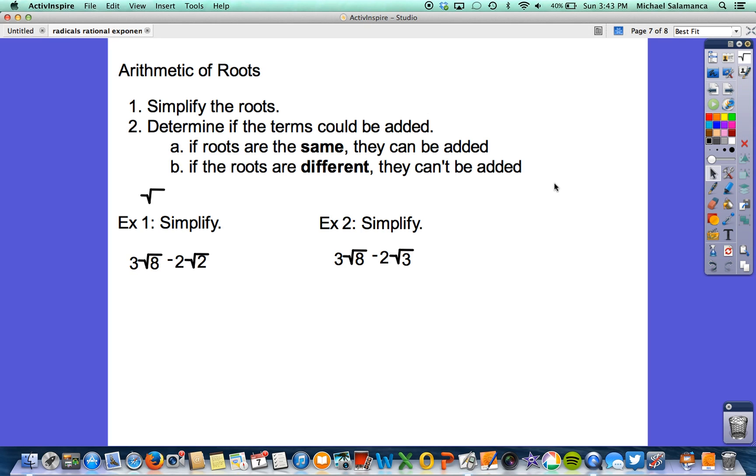Arithmetic of roots, very simple. Follow these two steps and then it will be very easy for you. First, we want to simplify the roots to determine if the terms could be added. If the roots are the same, they can be added. If they can't, or if the roots are different, they can't be added. Simple as that.